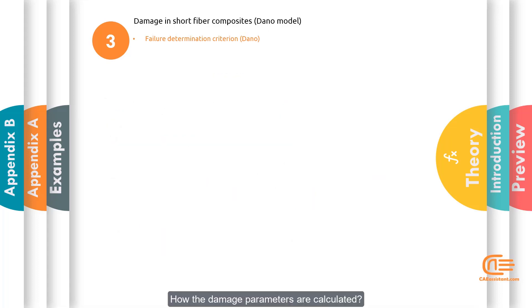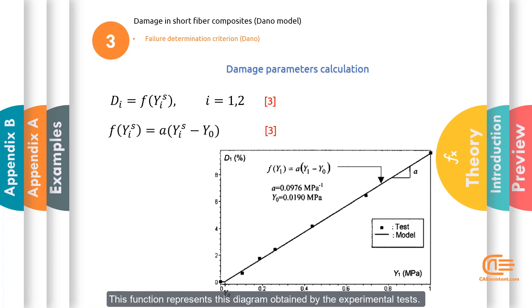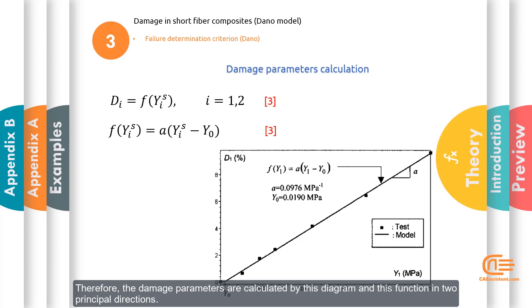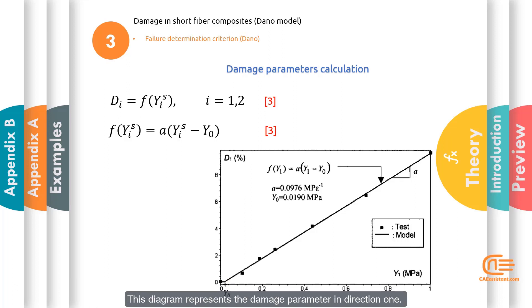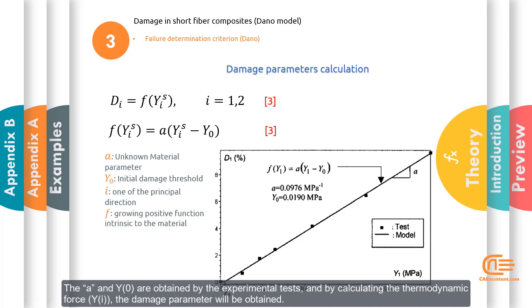The function F is a growing positive function intrinsic to the material. How the damage parameters are calculated? This is the relation we have just seen and this is the function F. This function represents this diagram obtained by the experimental tests. Therefore, the damage parameters are calculated by this diagram and this function is in two principal directions. This diagram represents the damage parameter in direction 1. The A is the unknown material parameter or as you see it represents the slope of this diagram. The Y0 is the initial damage threshold. The A and Y0 are obtained by the experimental tests and by calculating the thermodynamic force Yi the damage parameter will be obtained.